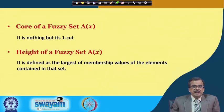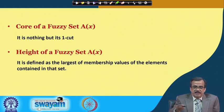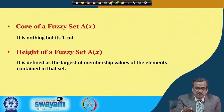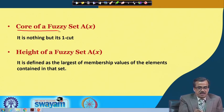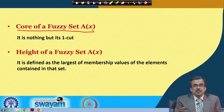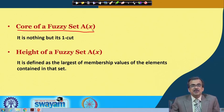We are going to define another term of a fuzzy set, and that is known as the core of a fuzzy set. The core of a fuzzy set is defined as its one-cut.